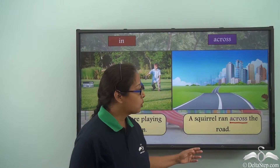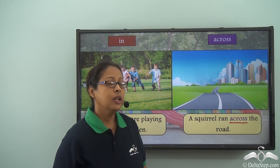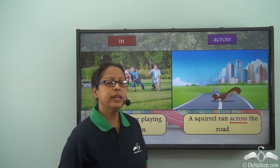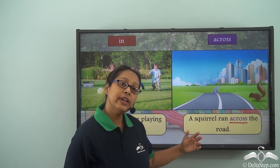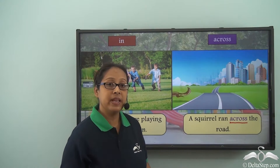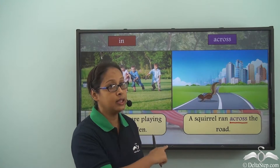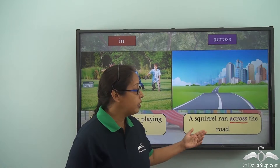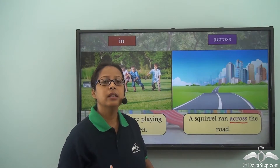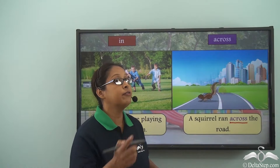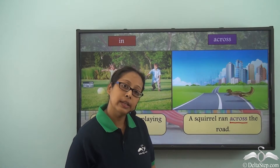Now if I say 'a squirrel ran in the road', the sentence would still be correct, but the meaning would differ. When we use 'across', we specify that the squirrel is moving from one side to the other. When we say 'in the road', it is moving within the road but not crossing over from one side to the other. So we use 'across' in this sentence.